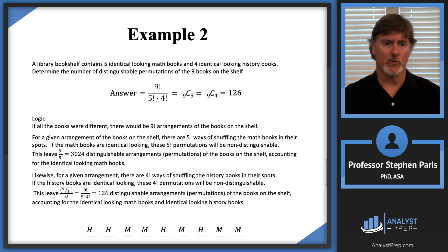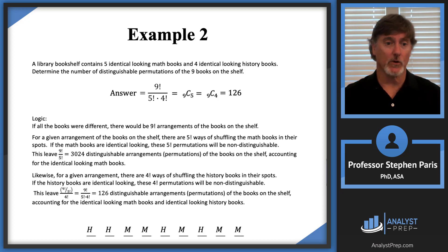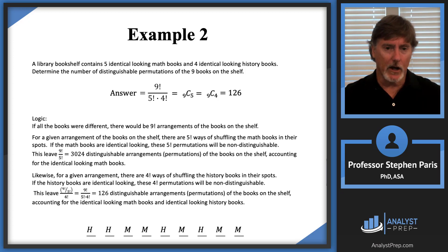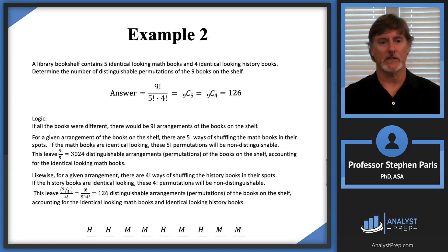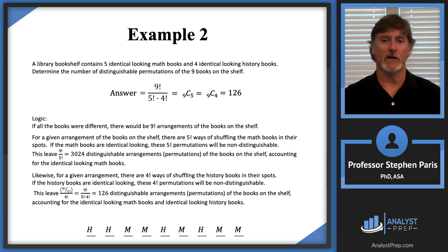The 126 came from 3,024 divided by four factorial, and the 3,024 came from nine factorial divided by five factorial. Unwinding everything, you can see why the answer is nine factorial divided by five factorial times four factorial in the denominator.